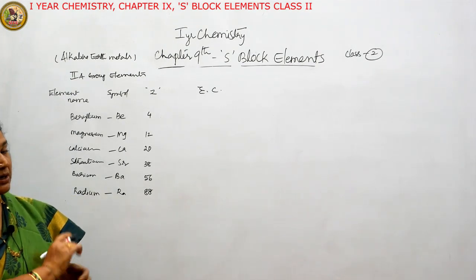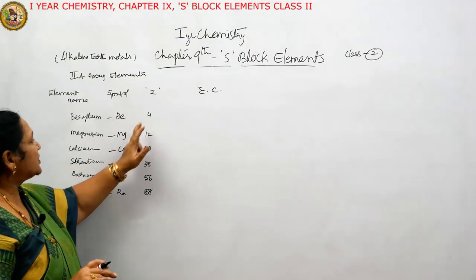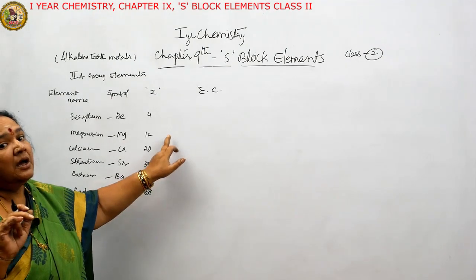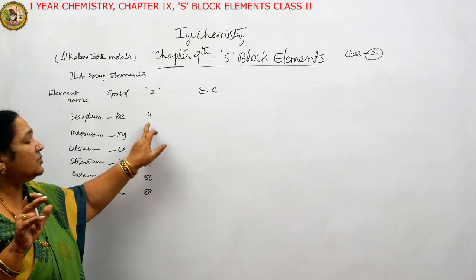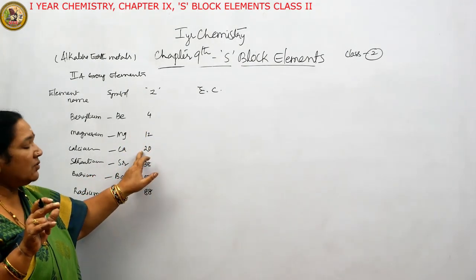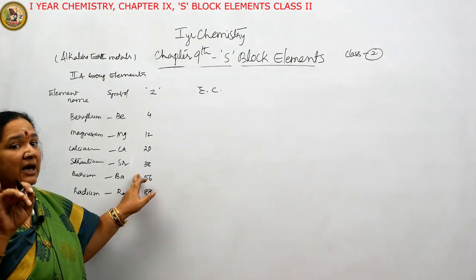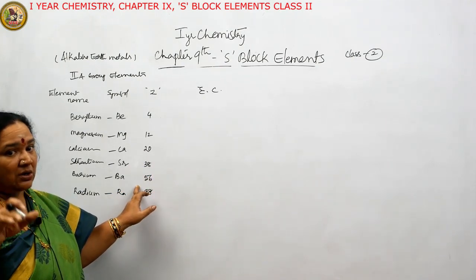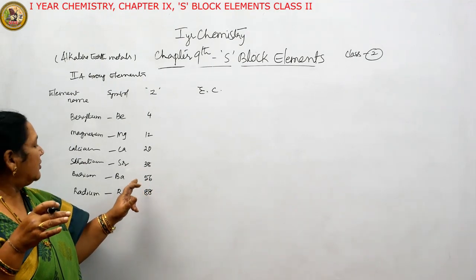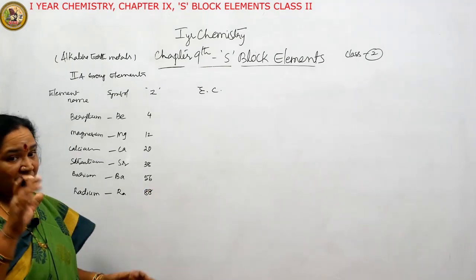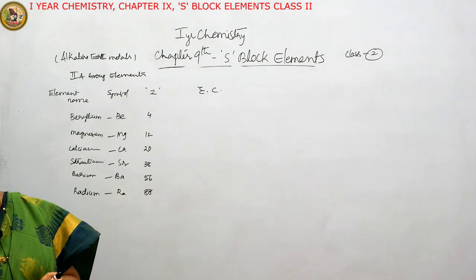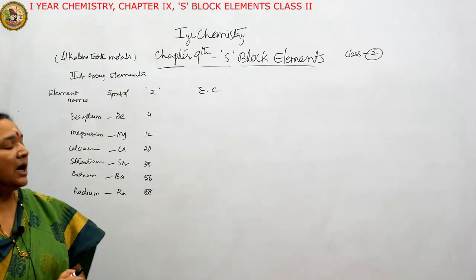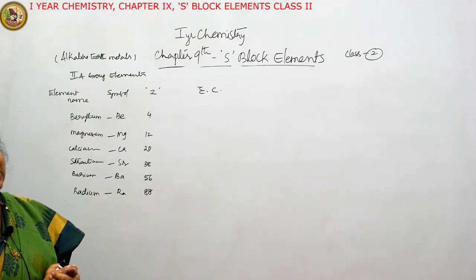If we didn't memorize the atomic numbers, we can derive them by filling shells. For magnesium: S subshell has maximum 2 electrons, P subshell has 6 electrons — 2 plus 6 is 8, and 4 plus 8 is 12. For calcium: 12 plus 8 is 20. For strontium: 20 plus 18 is 38, because S, P, and D subshells contribute — D has 10 electrons, so total is 18. For barium (56): add 32 (from 4D, 4F etc.). For radium (88): 56 plus 32 is 88, because the F subshell capacity is 14, contributing to 32 total.